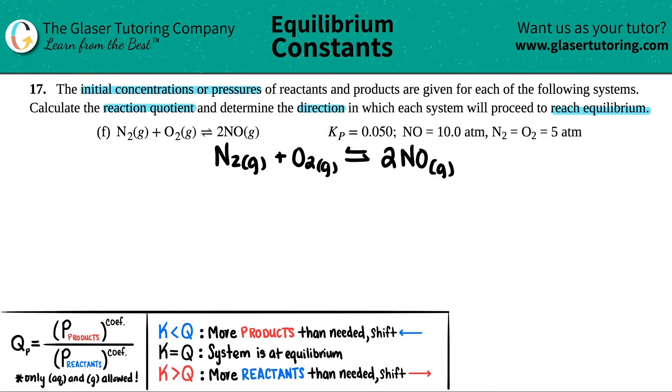Now they gave me pressure values and I have a Kₚ. P stands for pressure, so I should be given pressure values. Atm is a unit for pressure, so I'm just going to write down what I got. They told me that the NO was 10 atm, so NO is a product, I'm just going to say that this was 10 atm. And then it says that N₂ is the same as O₂, those are both 5 atm. So I got 5 atm here and I got 5 atm here.